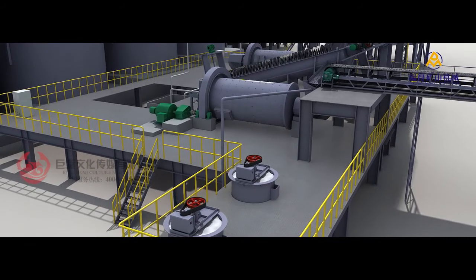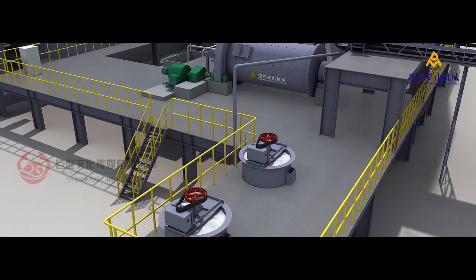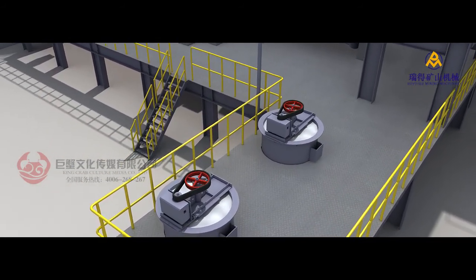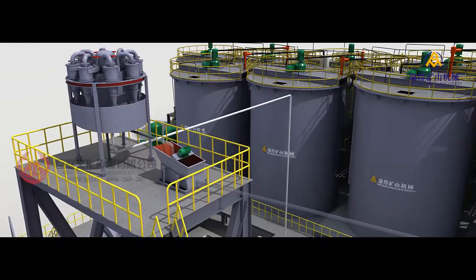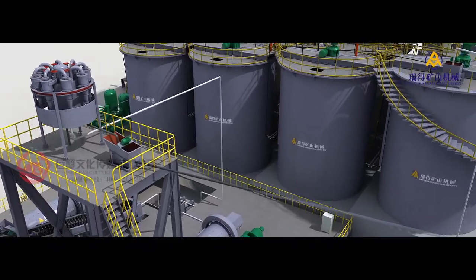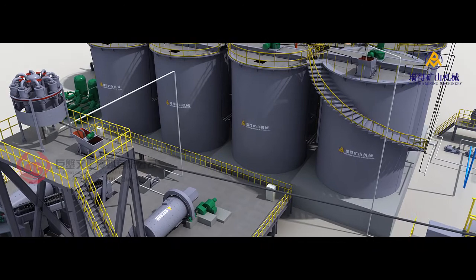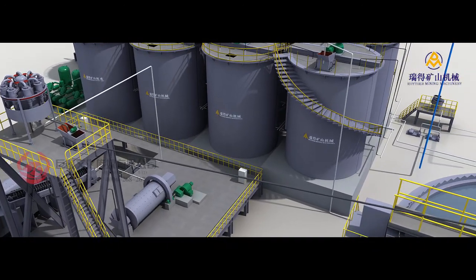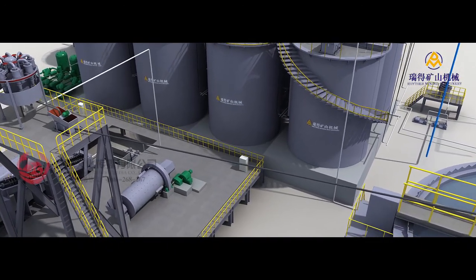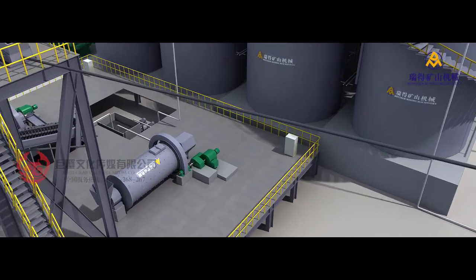To reach the pH value required for leaching period, lime milk prepared shall be added at the stage of grinding. Cyclone overflow will go through vibrating screen for removal of rejects and then goes into modified high efficiency thickener. Underflow of cyclone will go back to two-stage ball mill for grinding again.